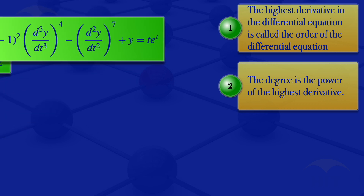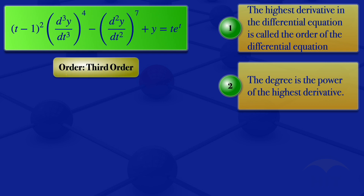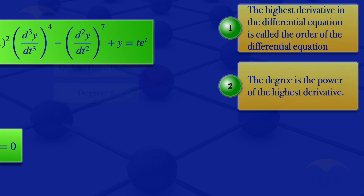Looking at the next equation, the highest derivative is the third derivative, so the order is third order. For the degree, we look at the power of the highest derivative — it is raised to the power 4, so the degree is 4. We are having a third order ODE with degree 4.